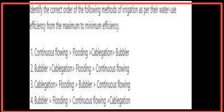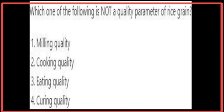The correct order of irrigation methods by water use efficiency from maximum to minimum is: drip system, followed by sprinkler, followed by flooding, and lastly continuous flow. Curing quality is not a parameter of rice grain quality.